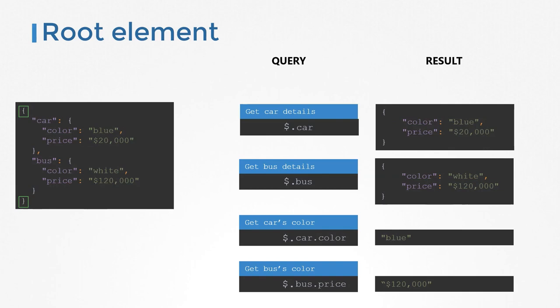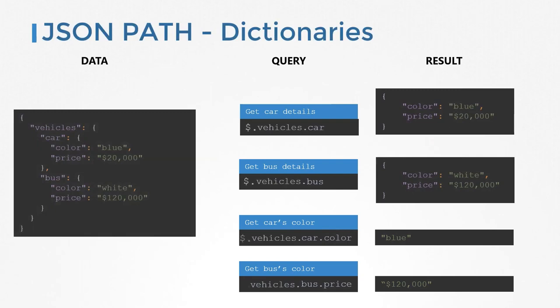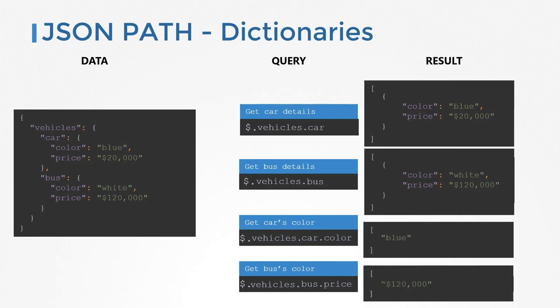But there is one more thing. The results you see — that's what you'd expect, but that's not exactly how you get it. All results of a JSON path query are encapsulated within an array. So when you run a query, you get the same result you expect, but encapsulated within a pair of square brackets. Remember that any output of the JSON path query is available to you within a pair of square brackets.